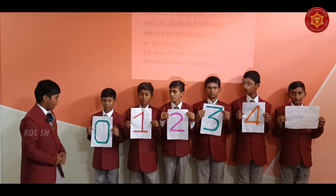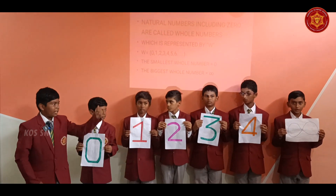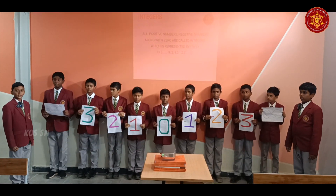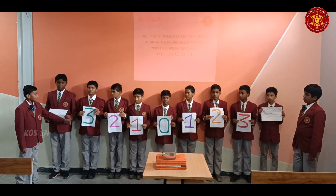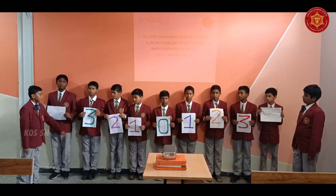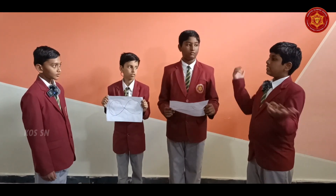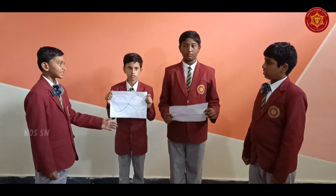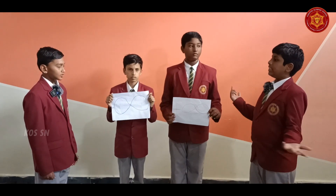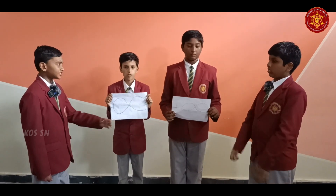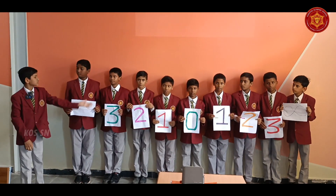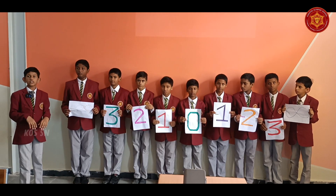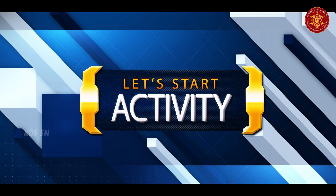The smallest whole number is zero. The biggest whole number is infinity. My name is Ritwik. I am studying in seventh Google. All positive numbers, all negative numbers, including zero are called integers. What is the smallest integer? The smallest integer is minus infinity. What is the greatest integer? The greatest integer is plus infinity. Using all these integers we are going to do the activity.